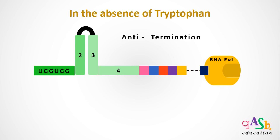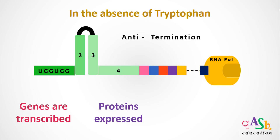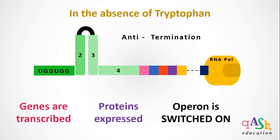Thus, in the absence of tryptophan, the genes are transcribed, proteins are made, and the trp operon is switched on.